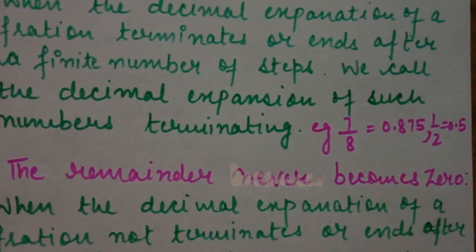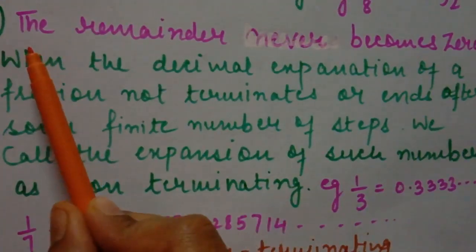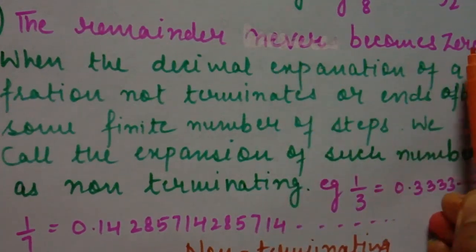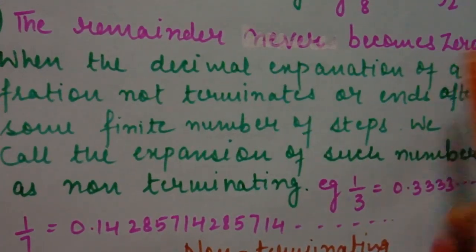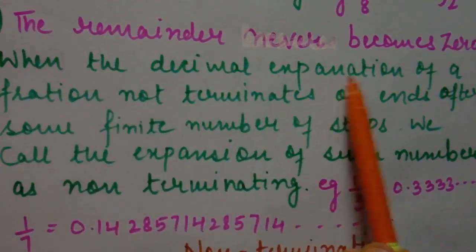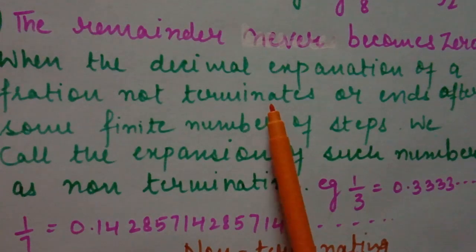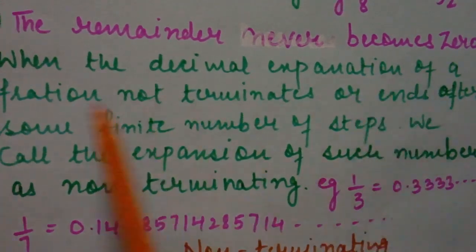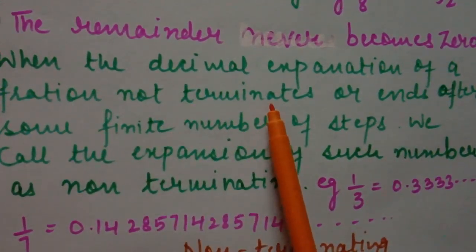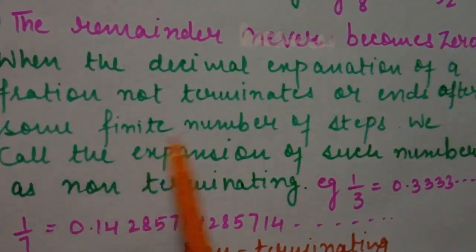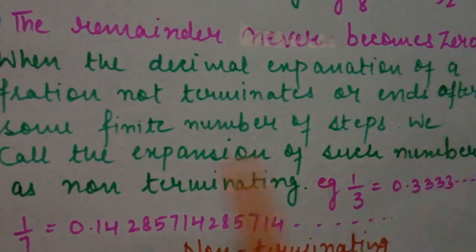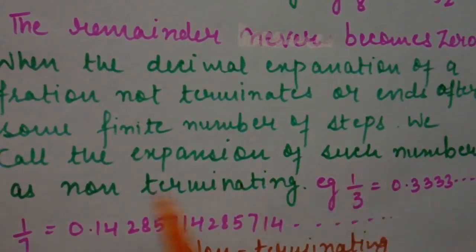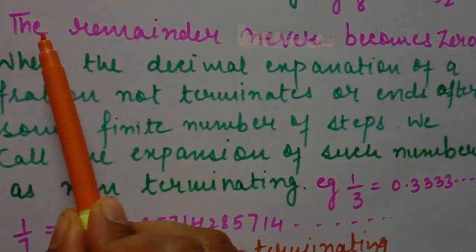The second part of decimal expansion is when the remainder never becomes zero. When the decimal expansion — meaning the division process of any fraction — does not terminate, meaning it does not finish or end after some finite number of steps, then we call the expansion non-terminating.